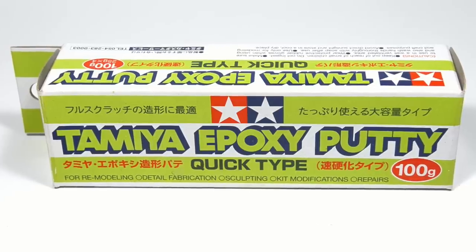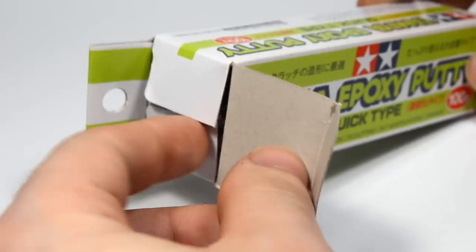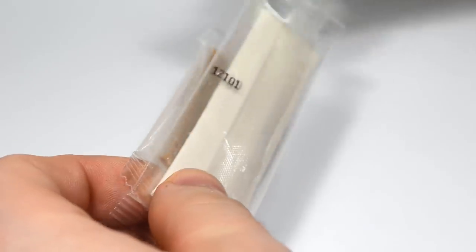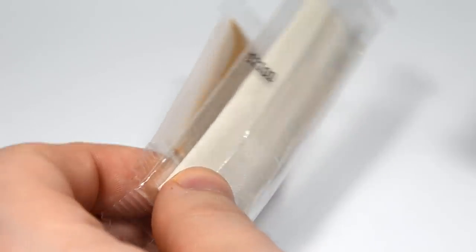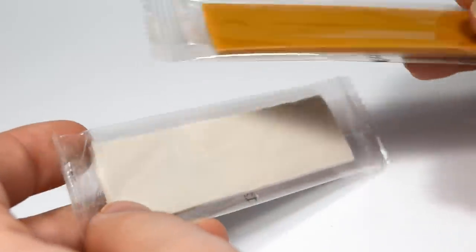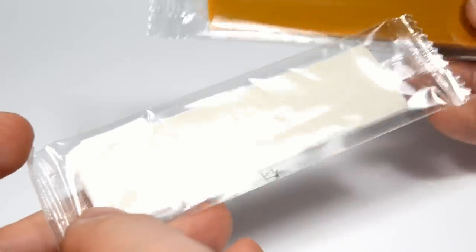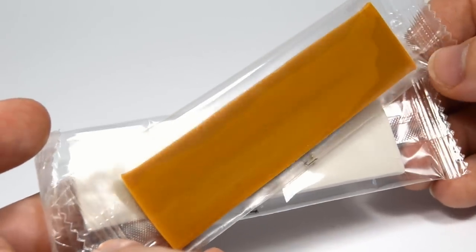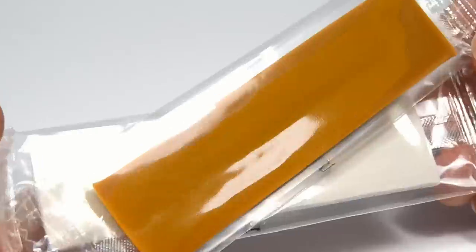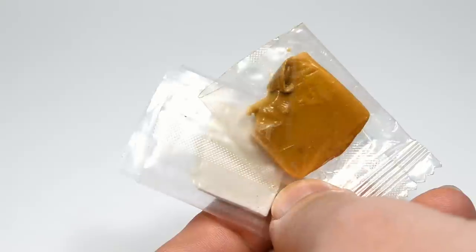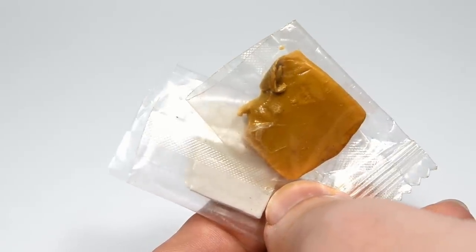And then for the actual welds you should get yourself some Tamiya epoxy putty quick type. I used to work with Magic Sculpt for years, but then I found this and wow, it's really the best thing ever. I like it so much I bought a double pack straight away. It has two components, resin and hardener, and it will last you for a long time. This is how much I have left from the first half of the package after probably four years of use.